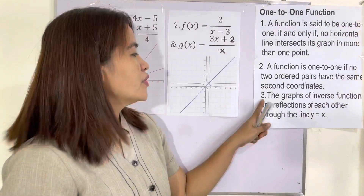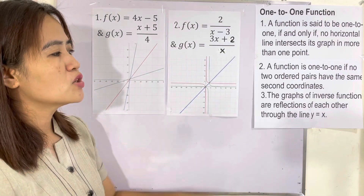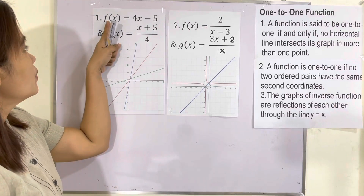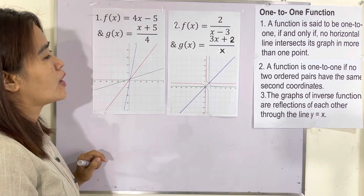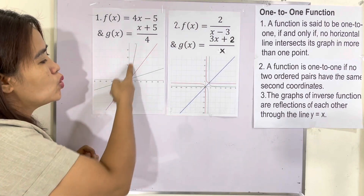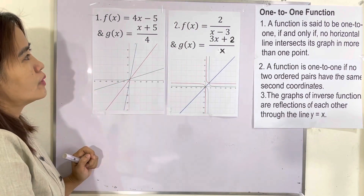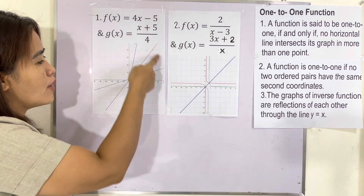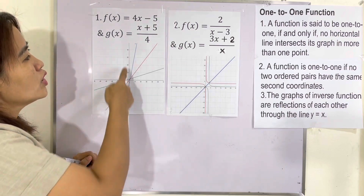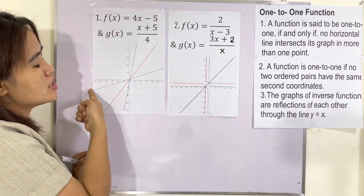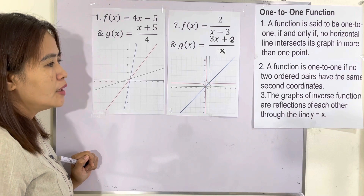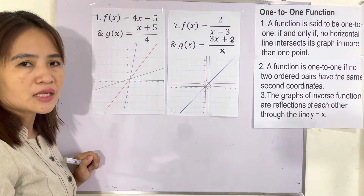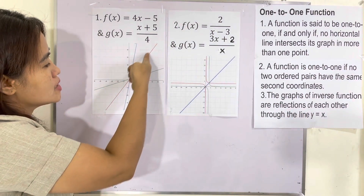Feature number three: the graphs of inverse functions are reflections of each other through the line y = x. We have f(x) = 4x − 5, whose graph is the blue one, and g(x) = (x + 5)/4, whose graph is the green one. The inverse of the blue is the green one, and they are reflections through the line y = x, which is the red one.